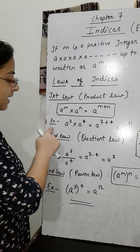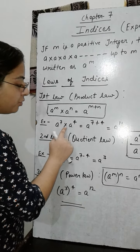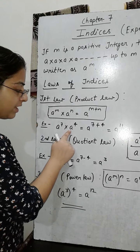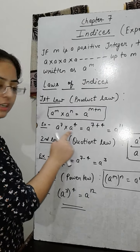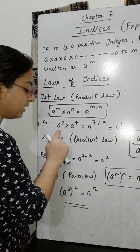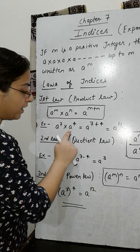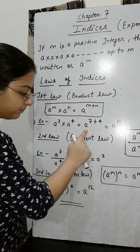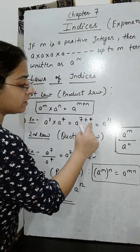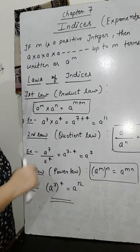Let's see one example. a raised to the power 7 into a raised to the power 4. In both terms, their bases are the same, that is a, and these two terms are multiplied with each other. So here the base will remain a only and the powers will be added. That is a raised to the power 7 plus 4, which equals a raised to the power 11.